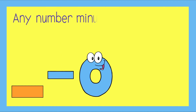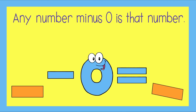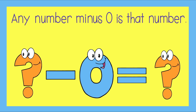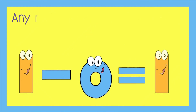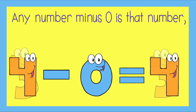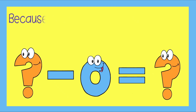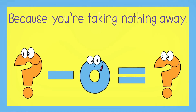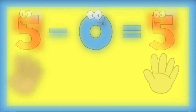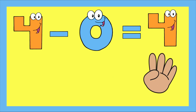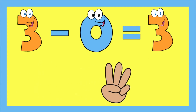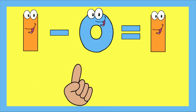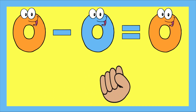Any number minus zero is that number, because you're taking nothing away. Five minus zero equals five. Four minus zero equals four. Three minus zero equals three. Two minus zero equals two. One minus zero equals one. Zero minus zero equals zero.